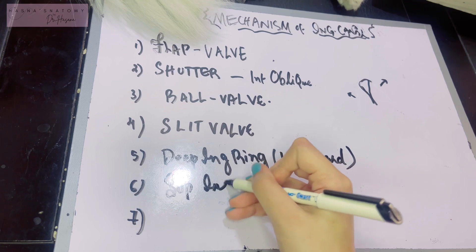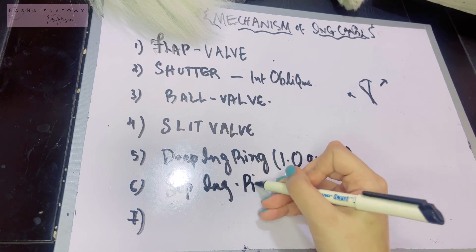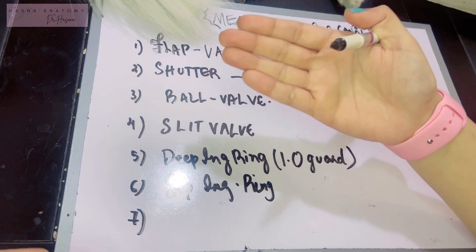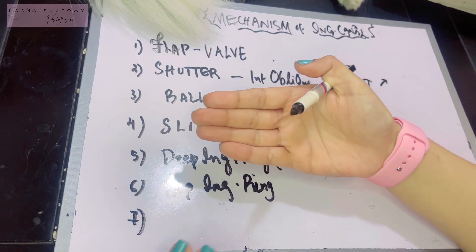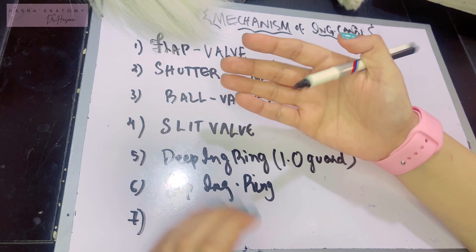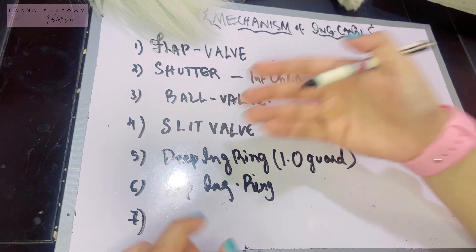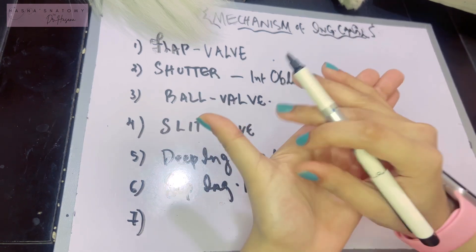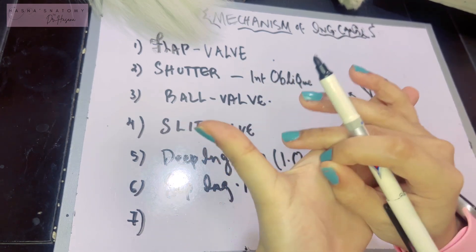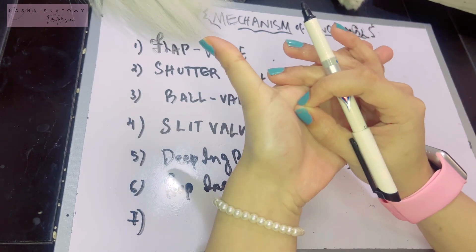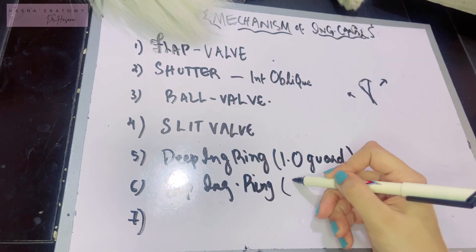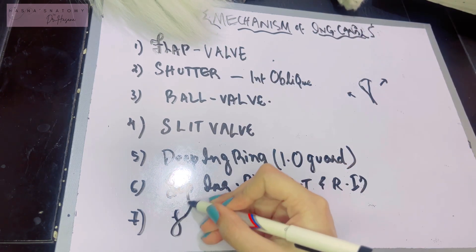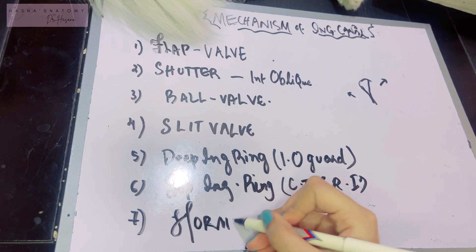The next important factor: posterior to the superficial inguinal ring is the conjoint tendon and the reflected part of the inguinal ligament — these two are responsible for closing the superficial inguinal ring from the back. So the superficial inguinal ring is guarded from the back by the conjoint tendon and the reflected part of the inguinal ligament.